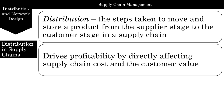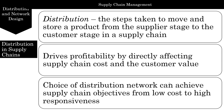Raw materials and components are moved from suppliers to manufacturers, and finished products are moved from the manufacturer to the end consumer. The choice of distribution network can achieve supply chain objectives from low cost to high responsiveness. Two of the world's most profitable companies, Walmart and 7-Eleven Japan, have built their success around outstanding distribution design and operation, and the same is true for Amazon from an online sales perspective.